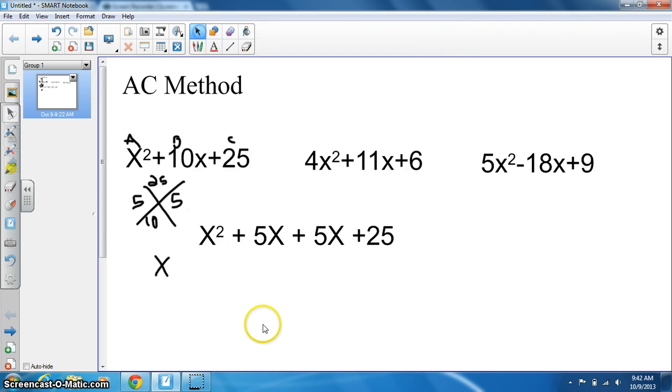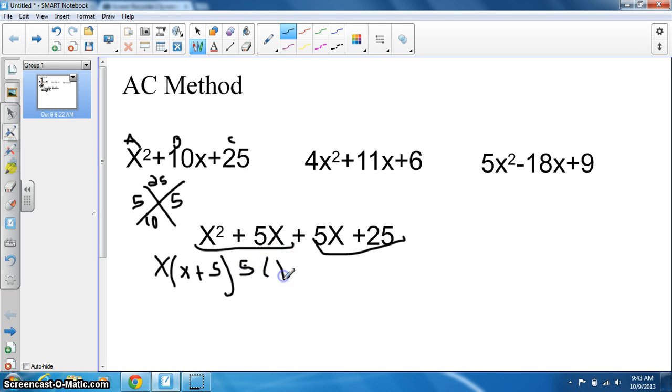We do the grouping method to factor completely. We split the equation in half and take the greatest common factor out of each. The greatest common factor of the first part is x, leaving us with x(x + 5). For the second equation, 5x plus 25, the greatest common factor is 5.